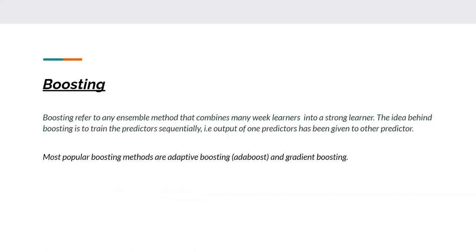Then there's boosting. Boosting refers to any ensemble method that combines many weak learners or weak algorithms together into a strong learner. The idea behind boosting is to train predictors sequentially — meaning the output of one predictor is given to the next predictor. The most popular boosting algorithms are Adaptive Boosting, often called AdaBoost, and Gradient Boosting. The main difference between bagging and boosting is that in bagging, we do not provide the output of one algorithm to another algorithm to get better outputs. I hope you liked this — your suggestions are welcome, thank you.